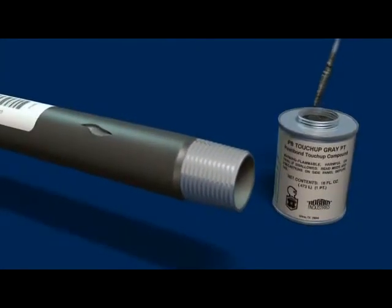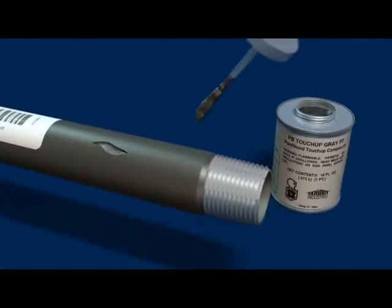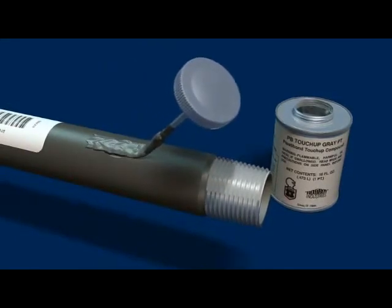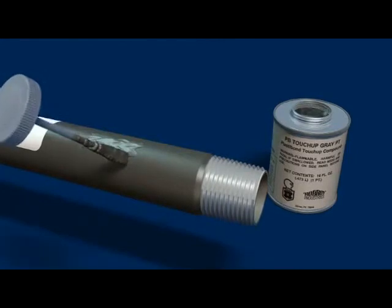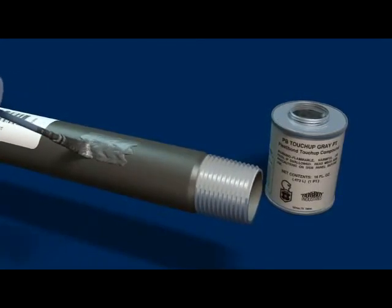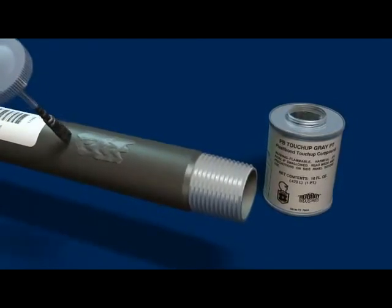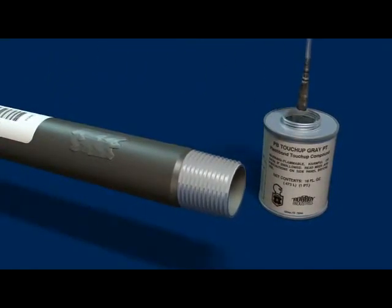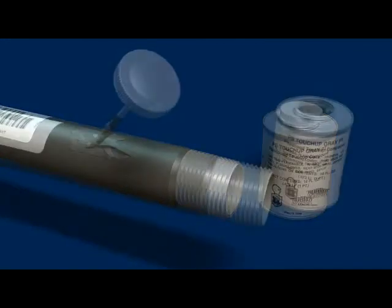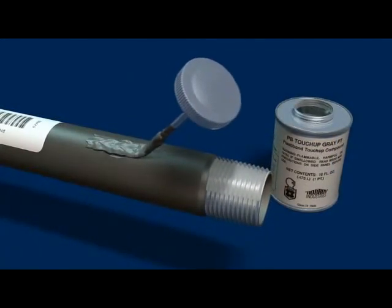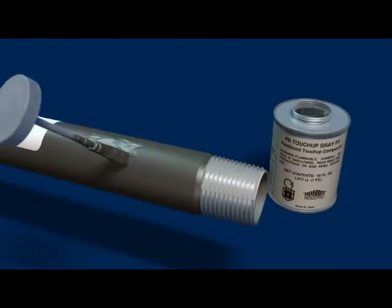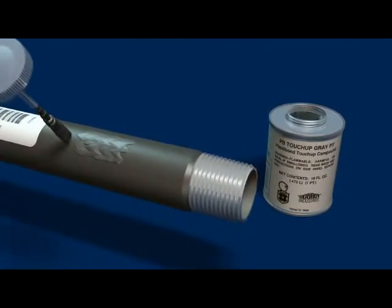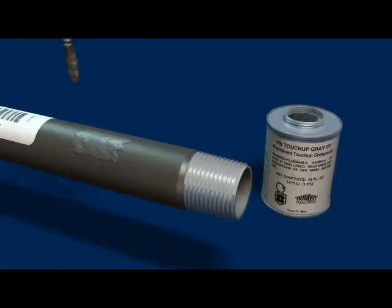CORE CAP touch-up compound is used to repair nicks, cuts and abrasions to the outer surface of CORE CAP coated conduit. Apply the exterior touch-up compound liberally over damaged areas. Because this material will not adhere to bare metal, it is advisable to overlap existing PVC coating. Sometimes it may be necessary to apply several coats in order to obtain adequate coverage. Allow the first coat to dry completely before applying additional coats.